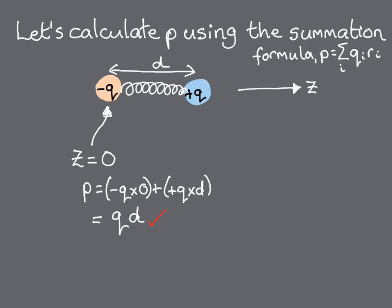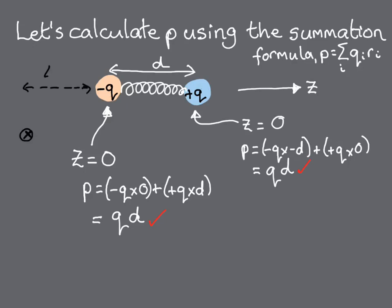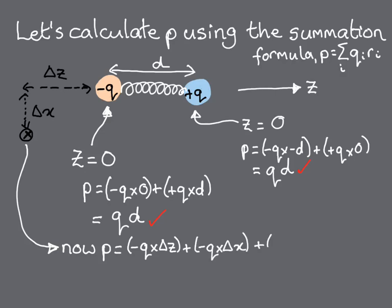If we repeat the procedure, but this time we take the origin to be at the cation, then P is equal to minus Q times minus D, plus Q times zero, which again is equal to Q times D. We can choose a more complicated origin, such as the point marked by the black cross, which is delta Z in the negative Z direction from the anion, and delta X in the negative X direction from the whole molecule. Then P is equal to minus Q times delta Z, plus minus Q times delta X, plus Q times delta Z plus D, plus Q times delta X. The terms in X cancel out, as do the terms with delta Z, again giving us Q times D.